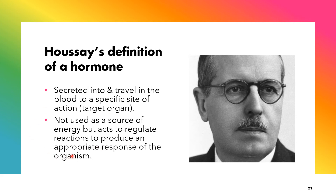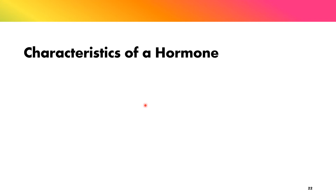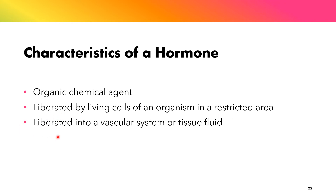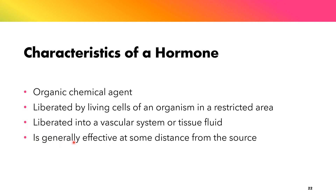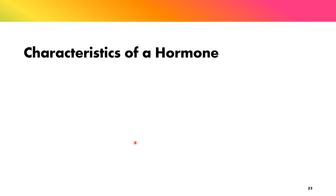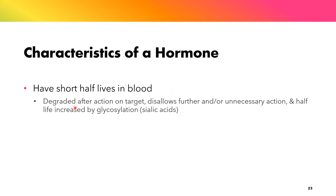That response could be either positive or negative, but it is usually positive. A hormone is considered to be an organic chemical agent. It is liberated by living cells of an organism in a restricted area and is liberated into the vascular system or tissue fluid. It is generally effective at some distance from the source, and its action could result in the coordination of parts of the organism. Hormones also have short half-lives in the blood. They are degraded after action at the target, preventing further or unnecessary action. Their half-life can be increased by the process known as glycosylation through sialic acids.